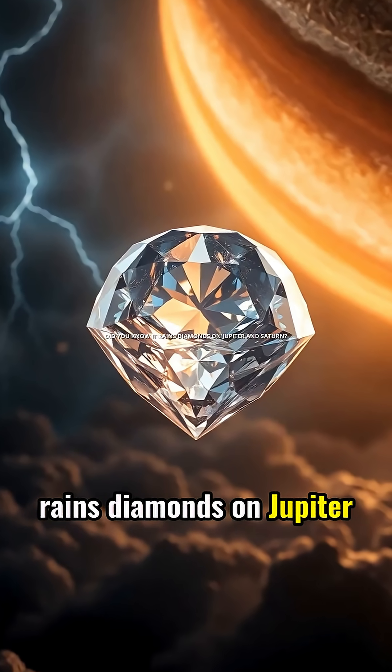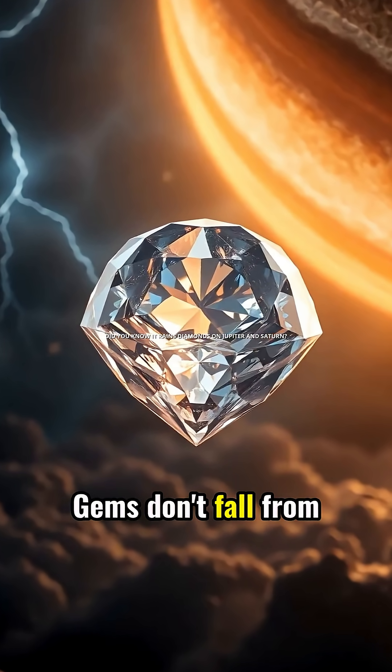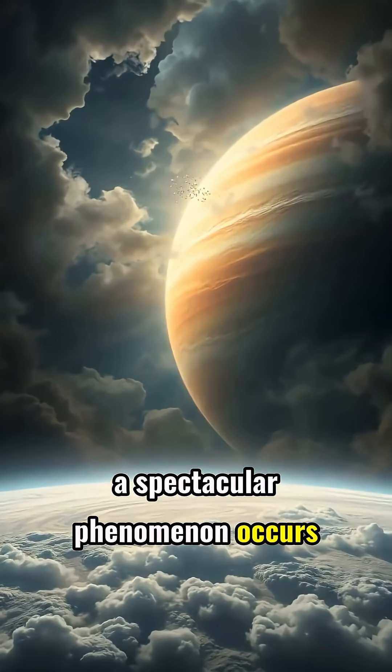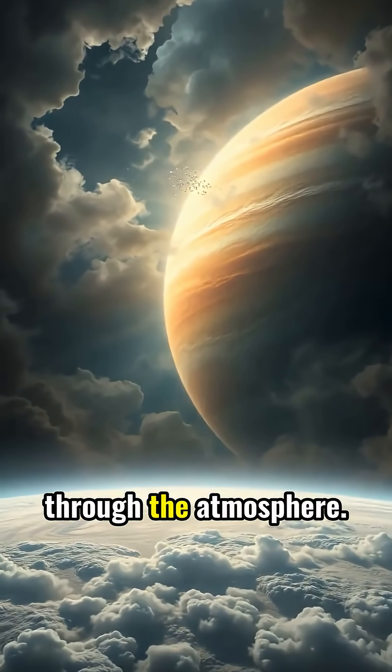Did you know it rains diamonds on Jupiter and Saturn? Gems don't fall from our skies. On Jupiter and Saturn, a spectacular phenomenon occurs where actual diamonds fall through the atmosphere.